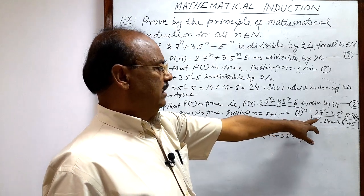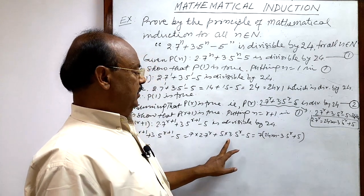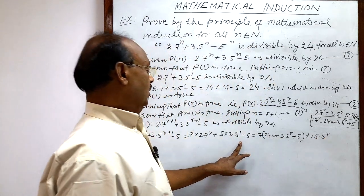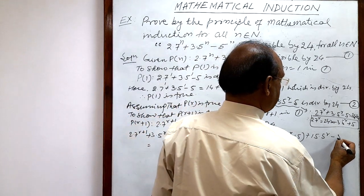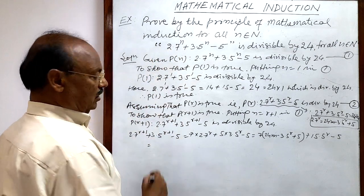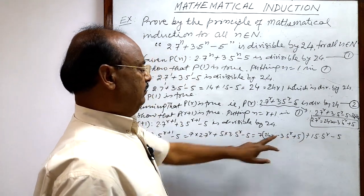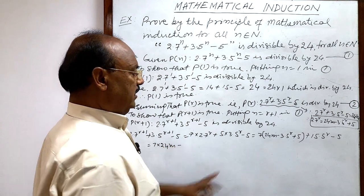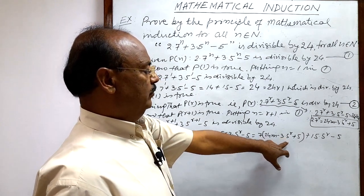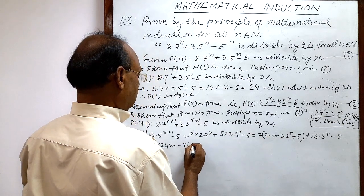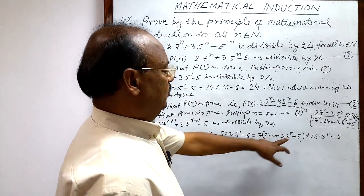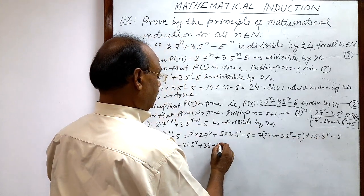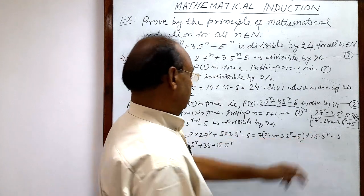Putting the value of 2·7ʳ into the expression, the first term becomes 7·(24m - 3·5ʳ + 5), and the next term is 15·5ʳ, minus 5. Expanding: 7·24m - 7·3·5ʳ + 7·5 + 15·5ʳ - 5, which gives 7·24m - 21·5ʳ + 35 + 15·5ʳ - 5.